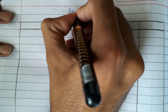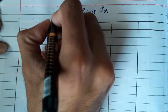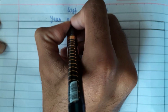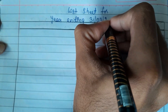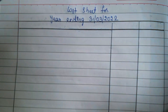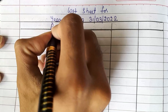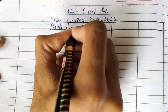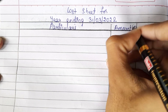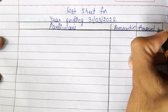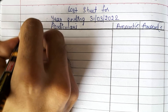First, here you need to mention: cost sheet for year ending 31st March 2022. This is a must in all problems — you need to write this. Here you mention particulars, and here the amount column. Now in the question they have given us the opening stock of raw materials.